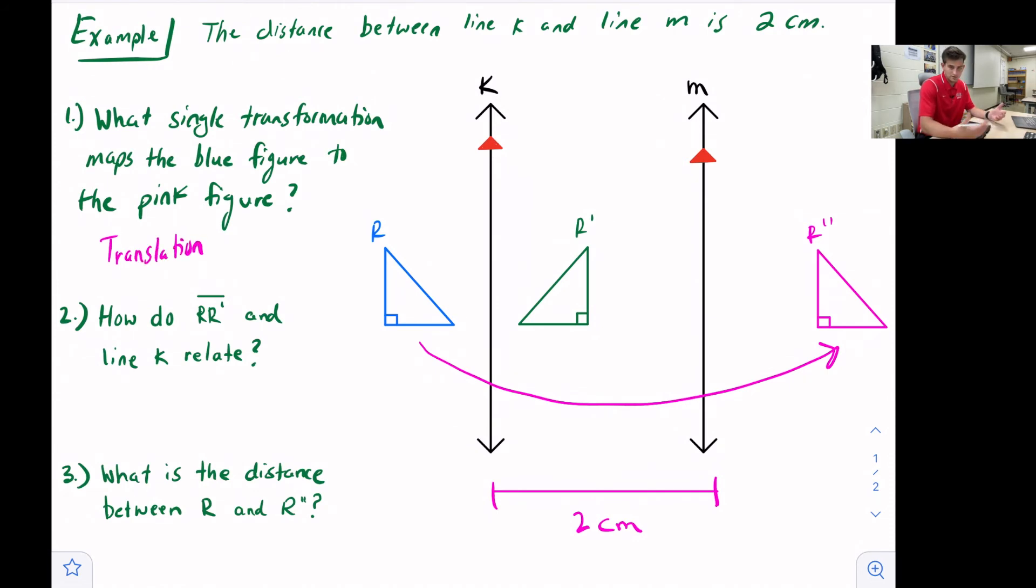And that's what we saw at the beginning when we talked about this theorem, is that if we do a composition of reflections over two parallel lines, then the resulting figure could be performed with just a translation.